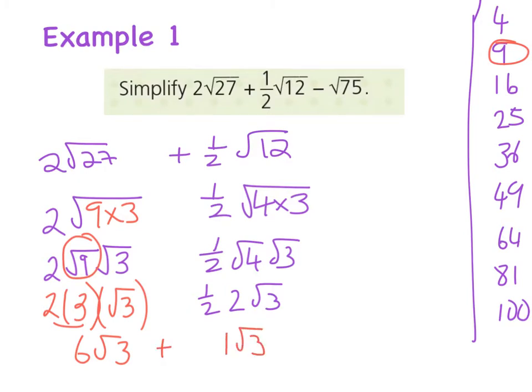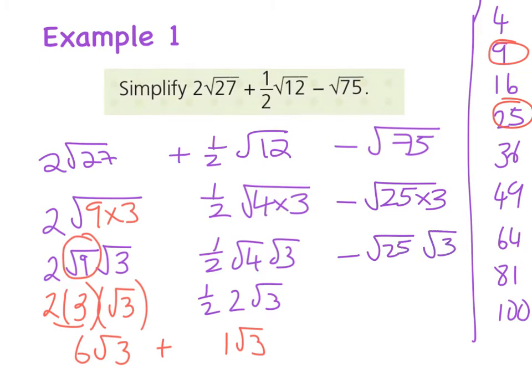And then the last one is minus √75. So again the biggest square number that's a factor of 75 is 25 and it is minus √(25×3) which is minus √25 by √3, means the same thing. But hang on, √25 is 5 so that really means minus 5√3.